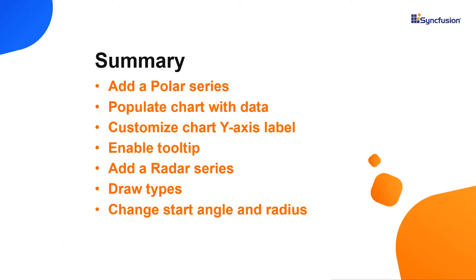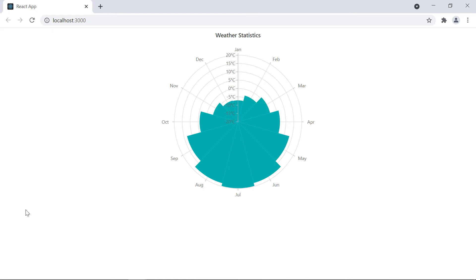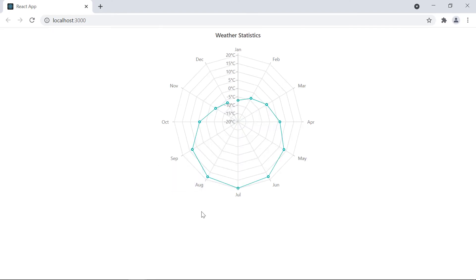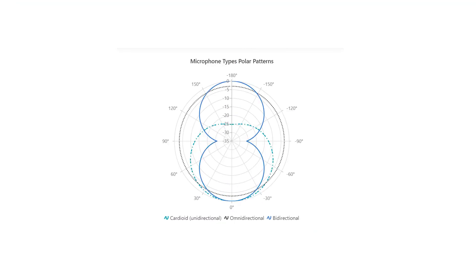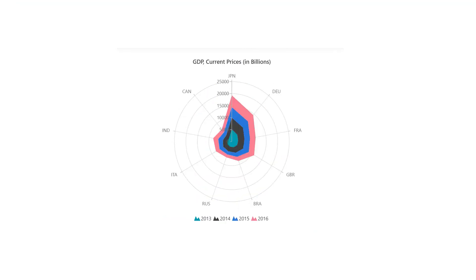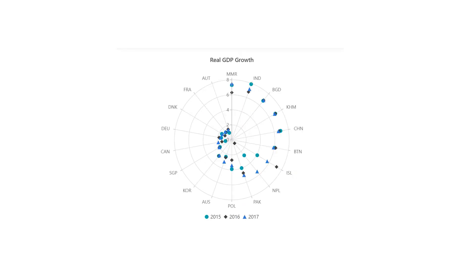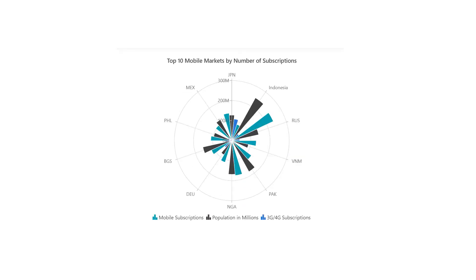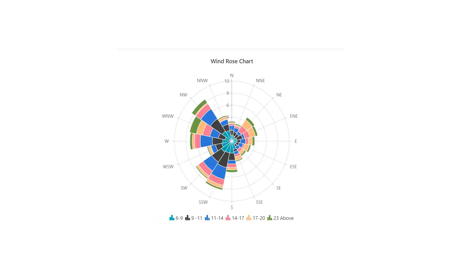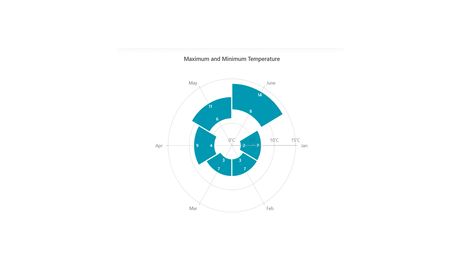Let me quickly summarize. You've learned how to create Syncfusion polar and radar charts in a React application, and how to add a title, marker, and tooltip to these two charts. You can download a working example from the GitHub link in the description below. You can also check if you're eligible for our community license, which provides a free license key to use our products. If you found this video useful, give it a like and subscribe to our channel.